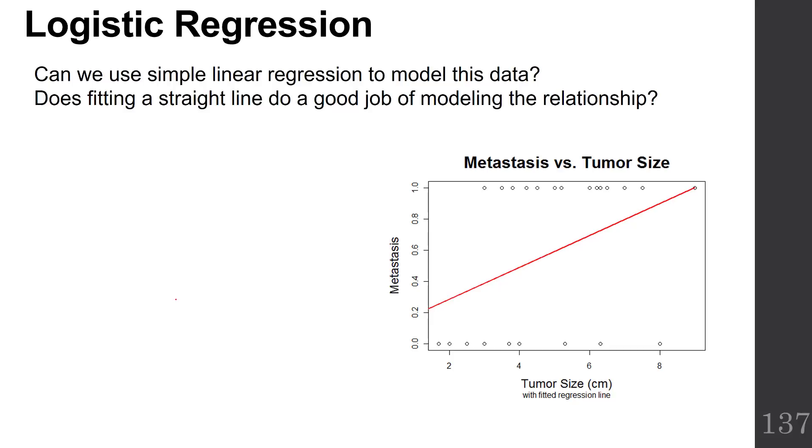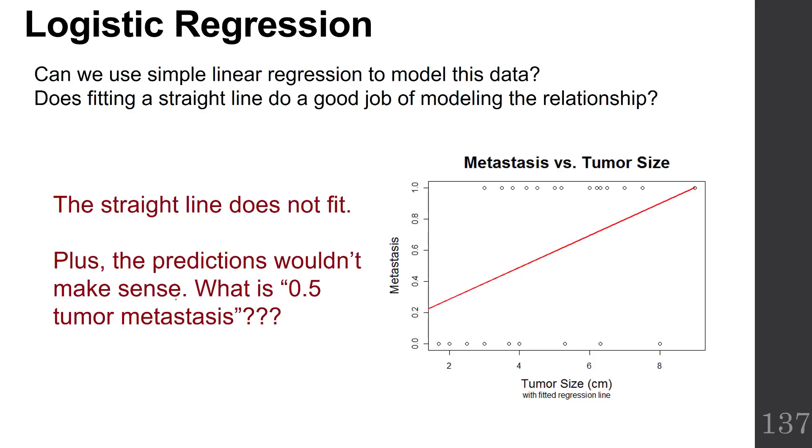Can we use simple linear regression to model this data? Does fitting a straight line do a good job of modeling the relationship? This straight line does not fit. Clearly it's not a good way to predict tumor metastasis. Furthermore, what's a 0.5 tumor metastasis mean? That's not interpretable.